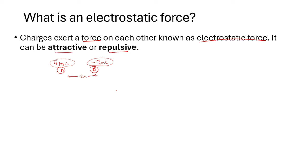We need to use free body diagrams to represent the force. Remember, everything that has to do with force in grade 11 and grade 12, you need to use a free body diagram. Let's draw the free body diagram for A, indicating the electrostatic force A is experiencing from B. Because A and B are oppositely charged, B is going to attract A — the arrow points toward B. This is the force of B on A. This diagram shows that A is being attracted by charge B because they are oppositely charged.